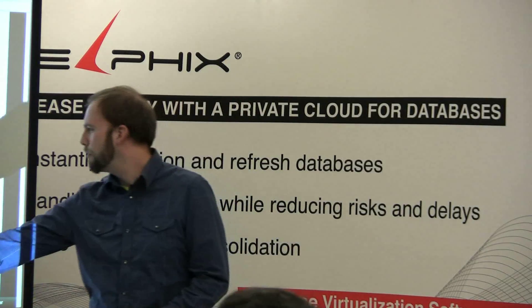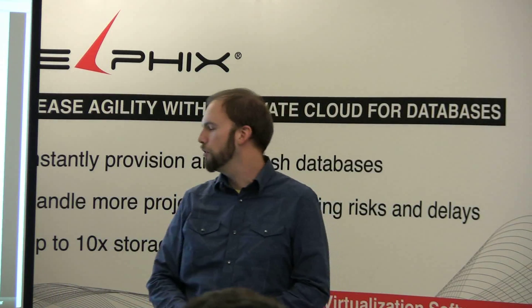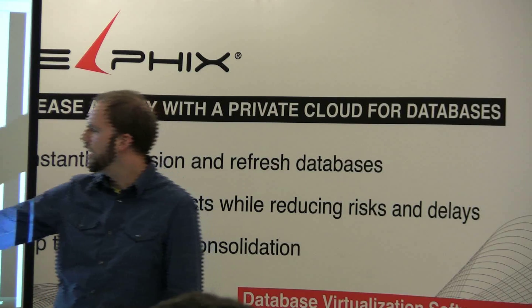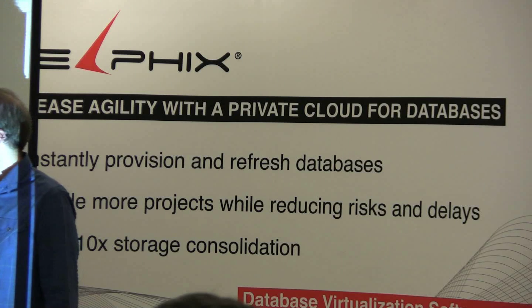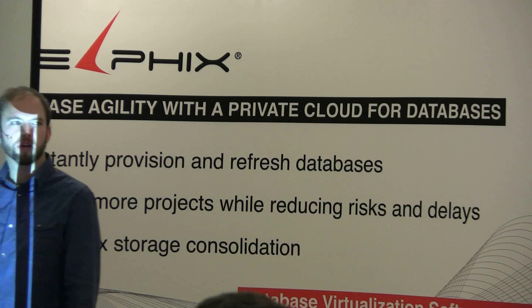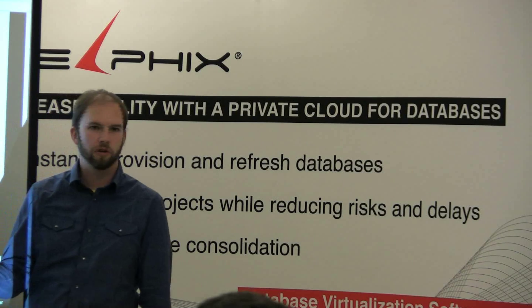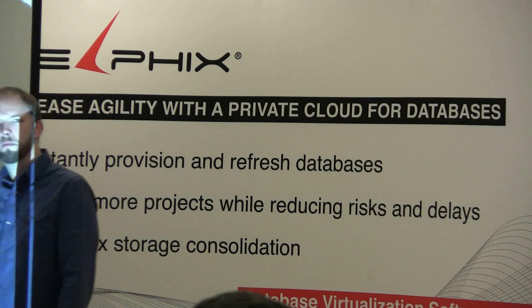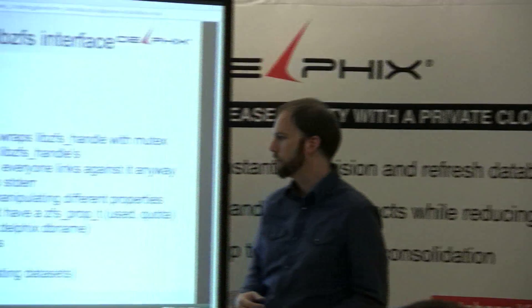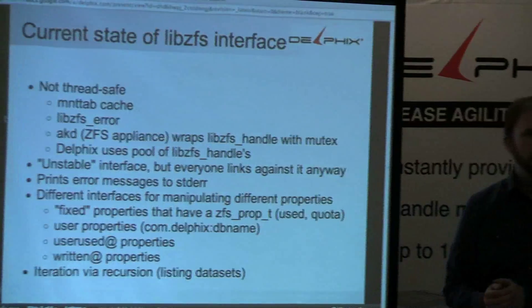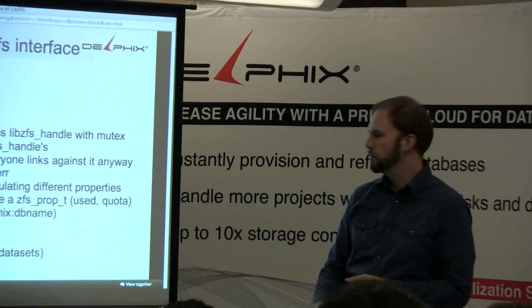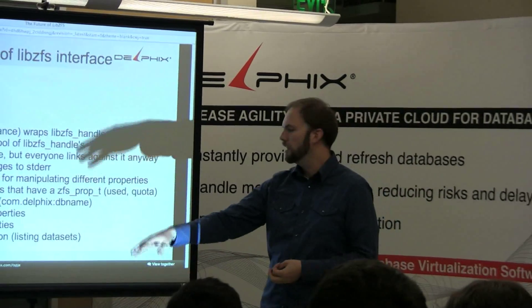The new written@ properties I recently introduced also have a different way of getting them. These properties allow you to specify something after the ZFS @ sign. For user-used, you can say how much space is being used by a particular user — like ZFS get userused@merrands — and it'll tell you how much space that user ID is using on a given file system. The written@ properties let you specify a snapshot and tell you how much space was written since that snapshot.